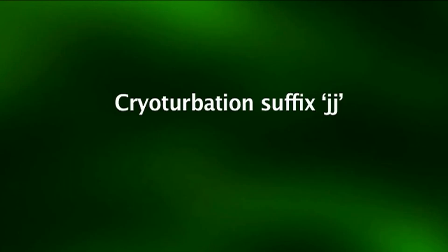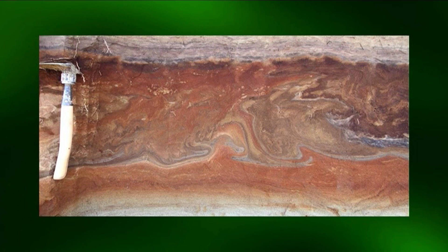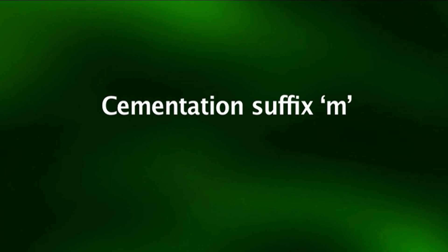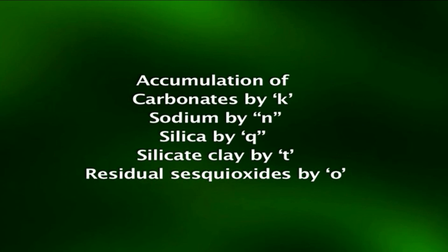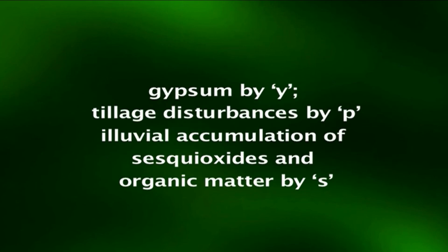Suffix 'jj' for cryoturbation — evidence includes irregular and broken soil horizon boundaries, stored rock fragments, and broken layers of organic matter. Suffix 'm' for cementation — used to indicate more than 90 percent continuous cementation. Many other suffixes are also used: 'k' for accumulation of carbonates, 'n' for sodium, 'q' for silica, 't' for silicate clay, 'o' for residual sesquioxides, 'y' for gypsum, 'p' for tillage disturbances, and 's' for illuvial accumulation of sesquioxides and organic matter.